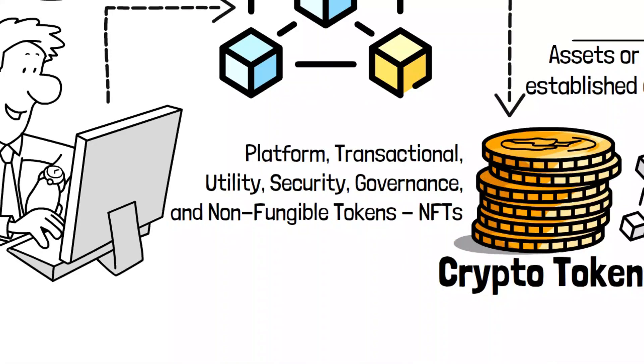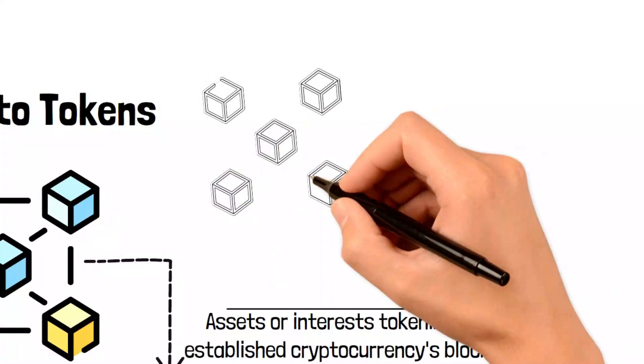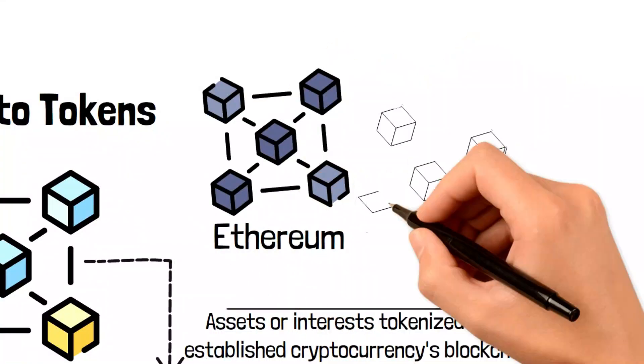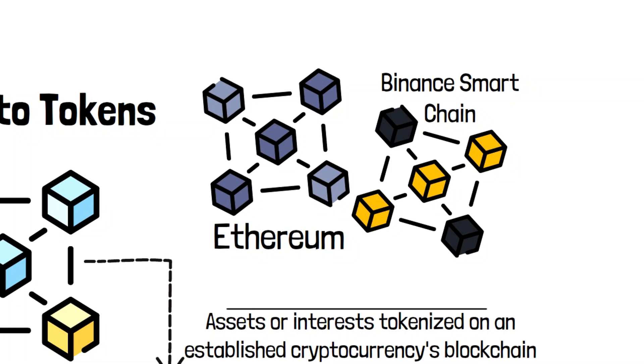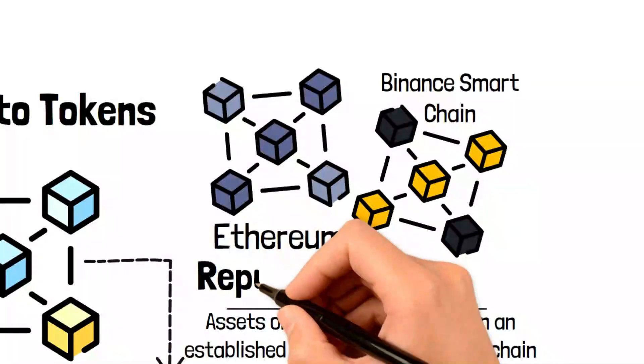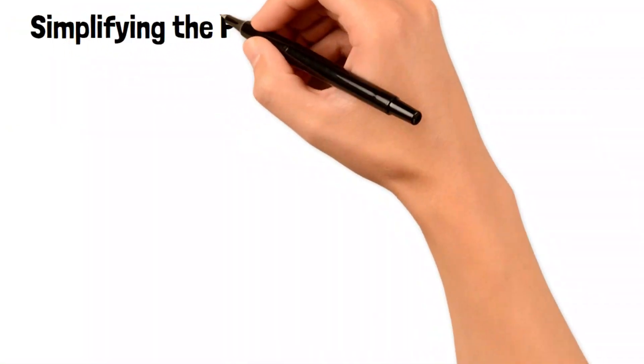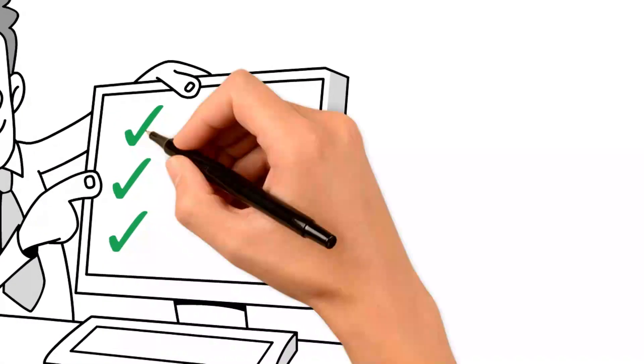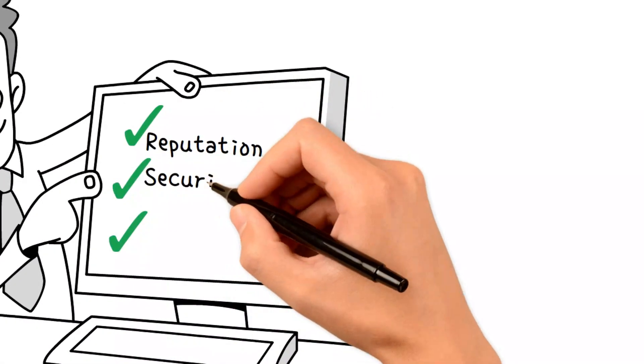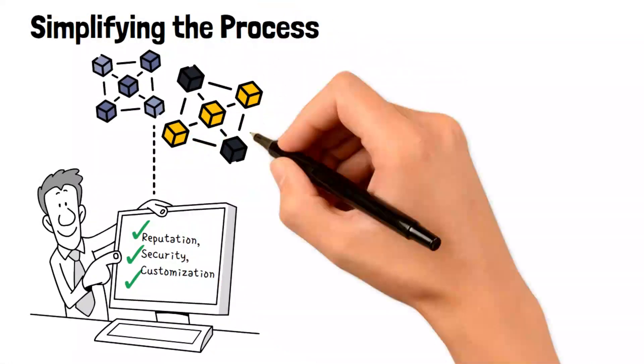Creating a token on established platforms like Ethereum or the Binance Smart Chain, more commonly known as the BSC, offers significant advantages including the backing of a reputable and secure blockchain network, simplifying the process. Start an enjoyable journey by making your cryptocurrency and using the reputation, security, and customization options of well-known blockchains.